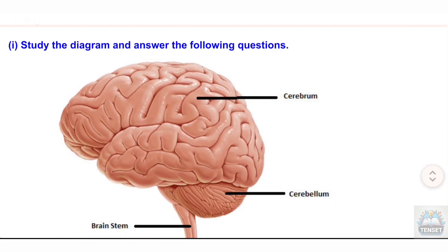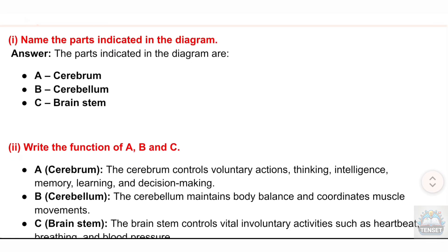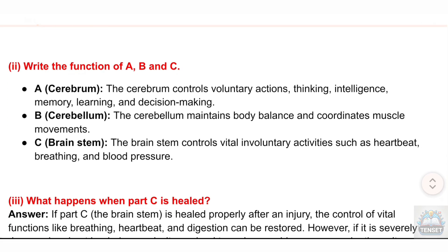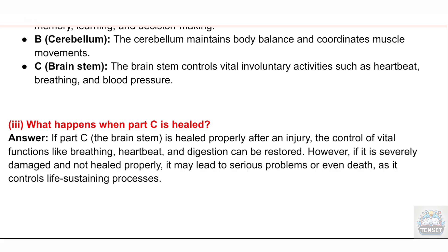(i) Study the diagram and answer the following questions. (i) Name the parts indicated in the diagram: (a) Cerebrum, (b) Cerebellum, (c) Brain stem. (ii) Functions: The cerebrum controls voluntary actions, thinking, intelligence, memory, learning, and decision making. The cerebellum maintains body balance and coordinates muscle movements. The brain stem controls vital involuntary activities such as heartbeat, breathing, and blood pressure. (iii) If part C (the brain stem) is injured, control of vital functions like breathing, heartbeat, and digestion may be impaired or lost, potentially leading to serious complications or death.